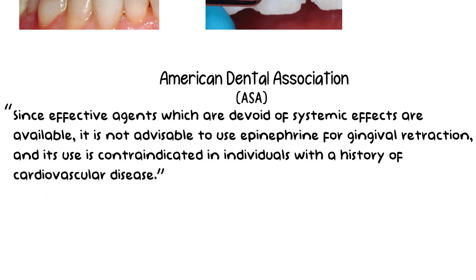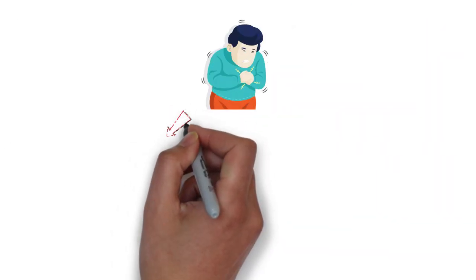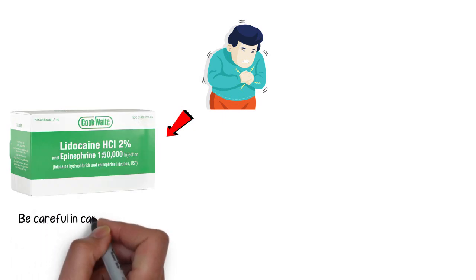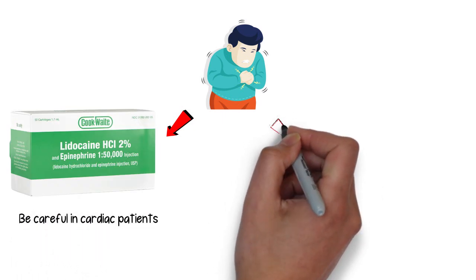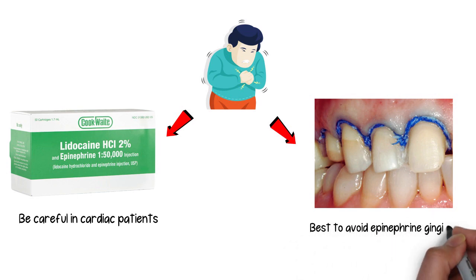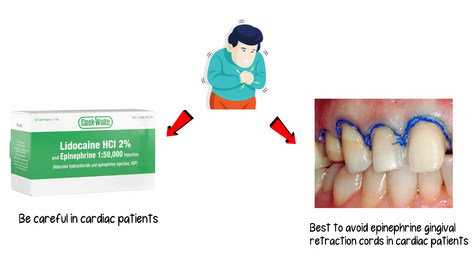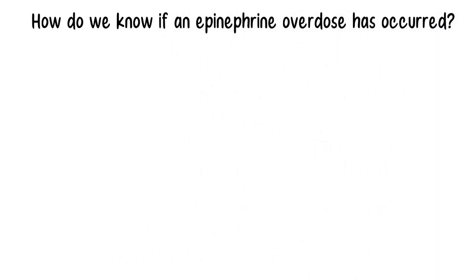From the entire discussion on epinephrine, we can conclude that it is recommended to use the minimum concentration of vasoconstrictor in normal individuals, with extreme caution in cardiac patients, especially when it comes to the gingival retraction cord. In fact, it is better to use other agents and to avoid the use of epinephrine in gingival retraction cords, especially in cardiac patients. But even after all this, how do we know if an epinephrine overdose has occurred?